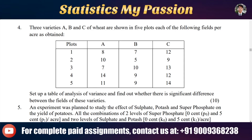Hi guys, welcome to Statistics My Passion. In this question we are discussing about the MST-005 assignment question: three varieties A, B, C of wheat are shown in five plots, with yields per acre obtained. We have clauses one to five and A, B, C are the three varieties of field.